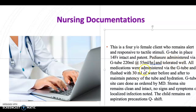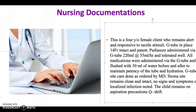All medications were administered through the G-tube and flushed with 30 ml of water before and after to maintain patency of the tube and hydration. We want to mention the rationale for flushing the G-tube — to maintain its patency and also to provide hydration, because patients on a G-tube are at very high risk for dehydration, so we want to prevent that.